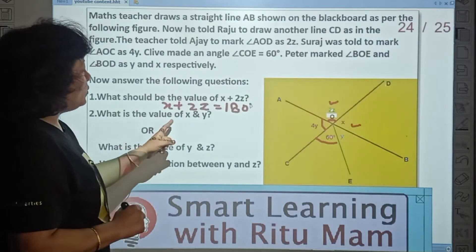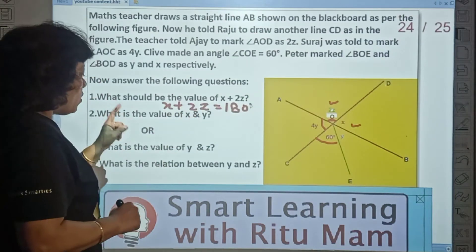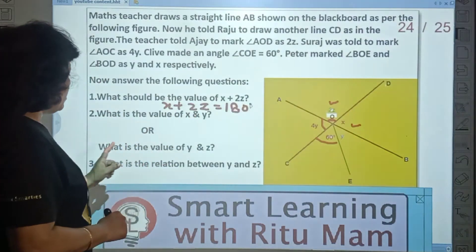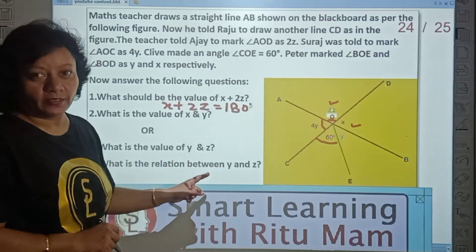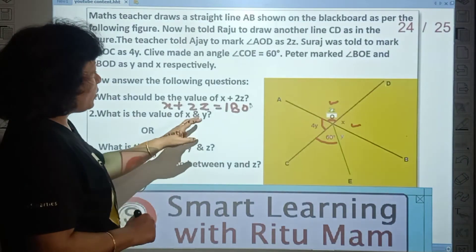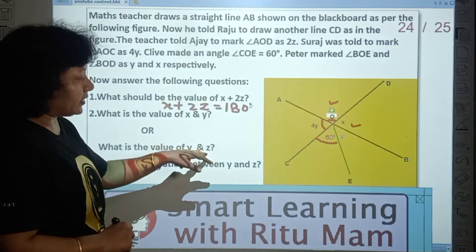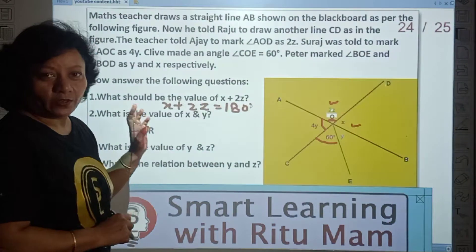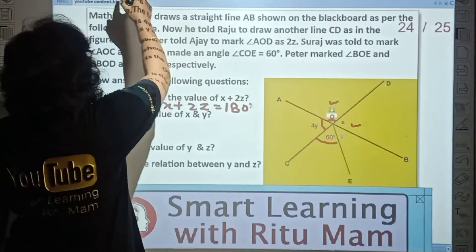Next, what is the value of X and Y? And this is what is the value of Y and Z. This means you have to find Y. If you understand X, do the first option. If you understand Z, do the second option. Look carefully.